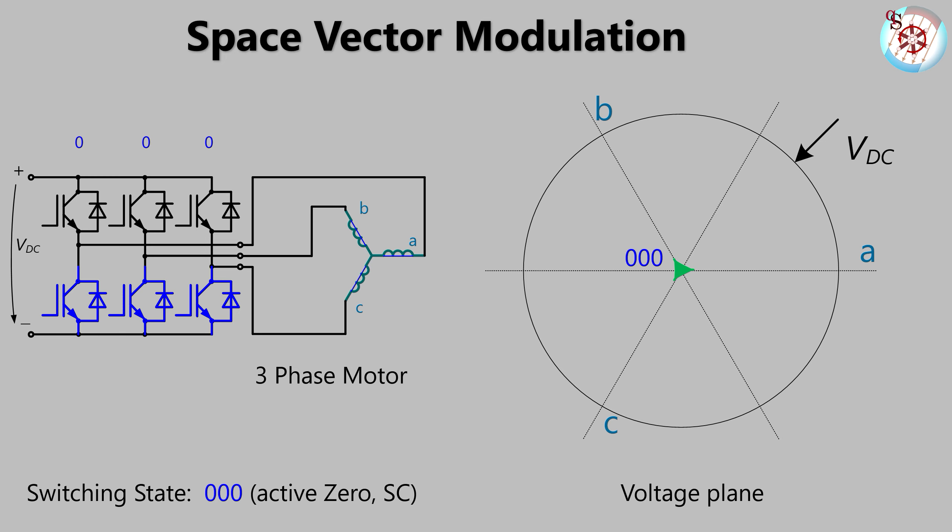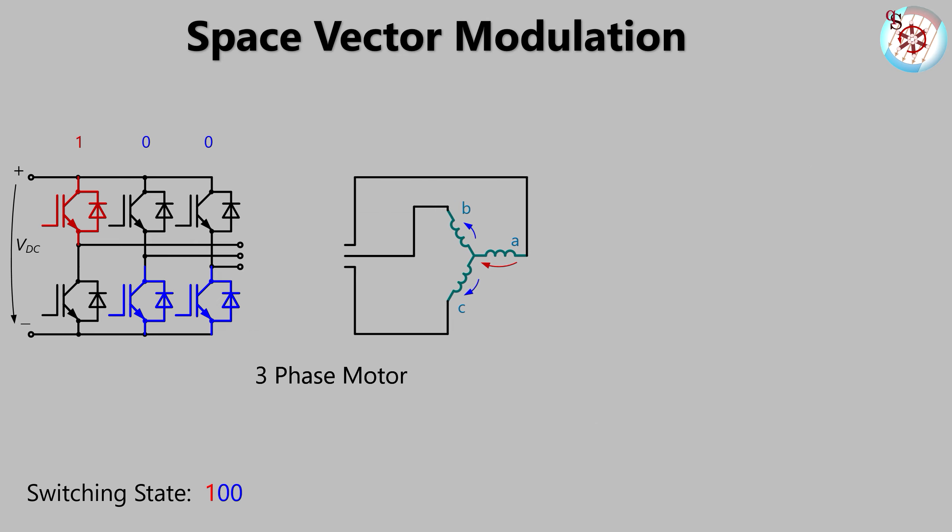We change states by switching one leg. Our next state is one double zero or in Asian speak one double O. The voltages across the motor windings require our attention now. Detaching the motor produces the following circuit.